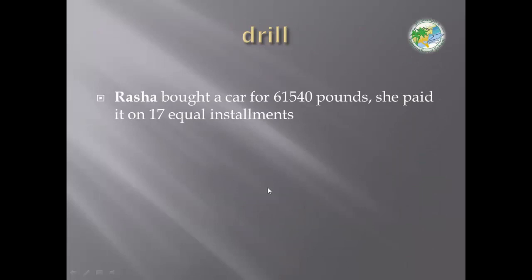Now we have a drill. Russia bought a car for 61,540 pounds. She paid it in 17 equal installments. Find the value of each installment. Before you answer, write in your notes this question and try to answer. But before your answer, you should know if this story requires multiply or divide. Find the value of each installment, each one, what should we pay? I give you 2 minutes. After you finish answering, we will show the model answer together. Start.